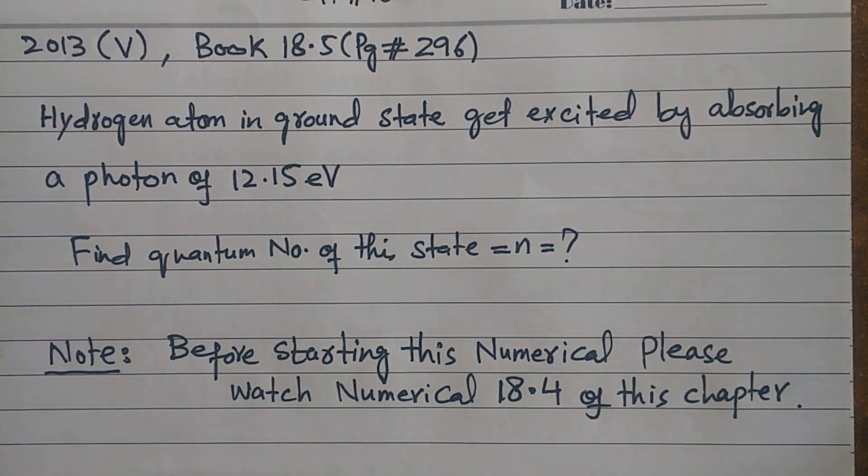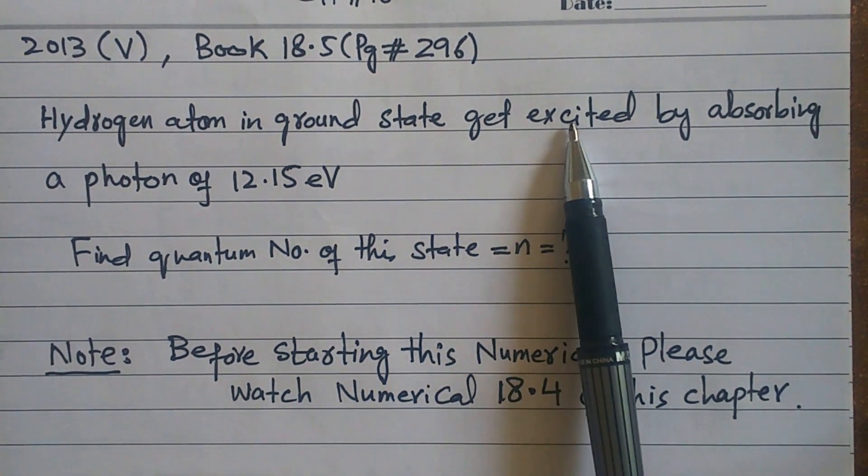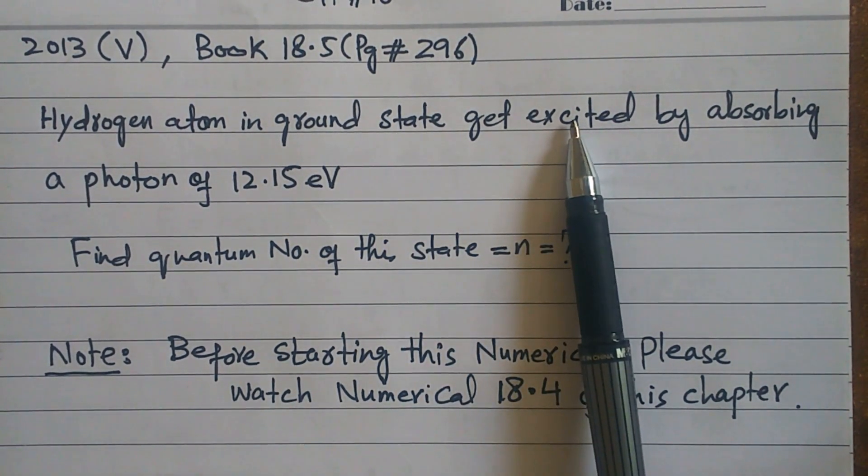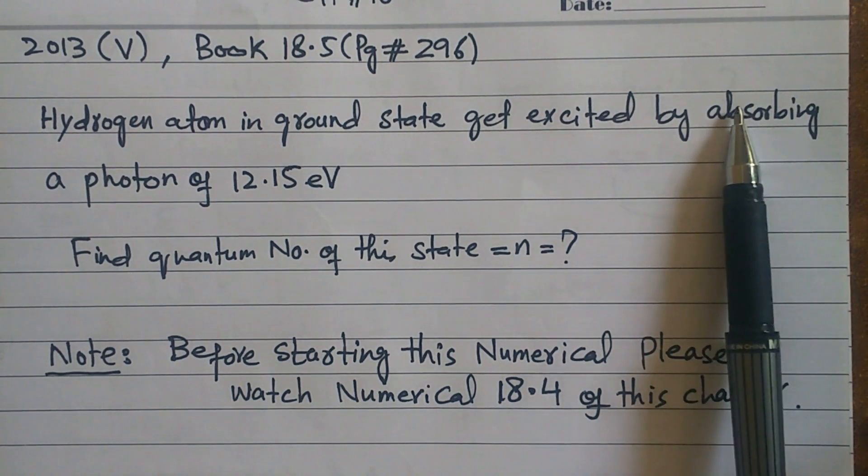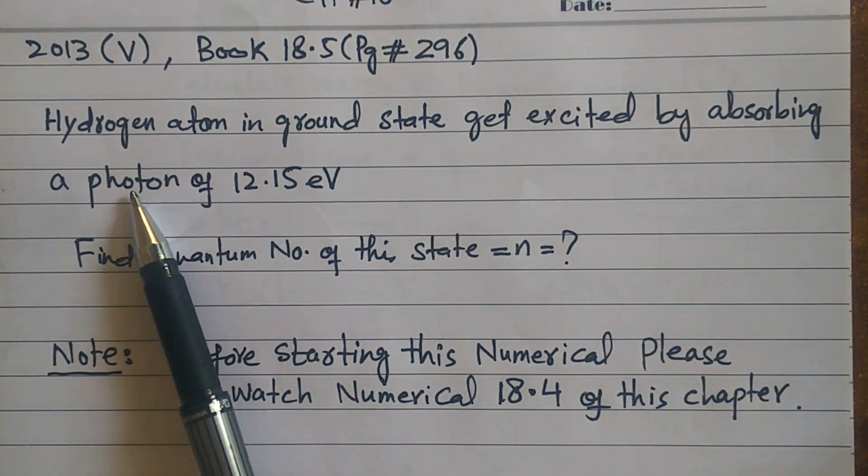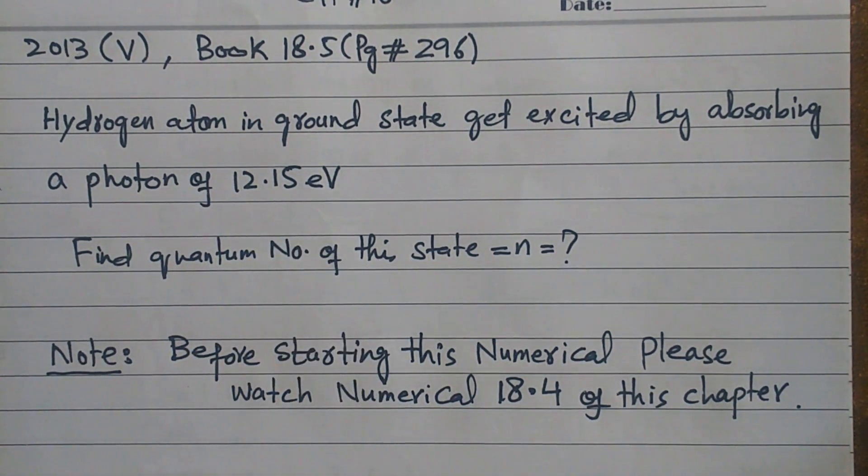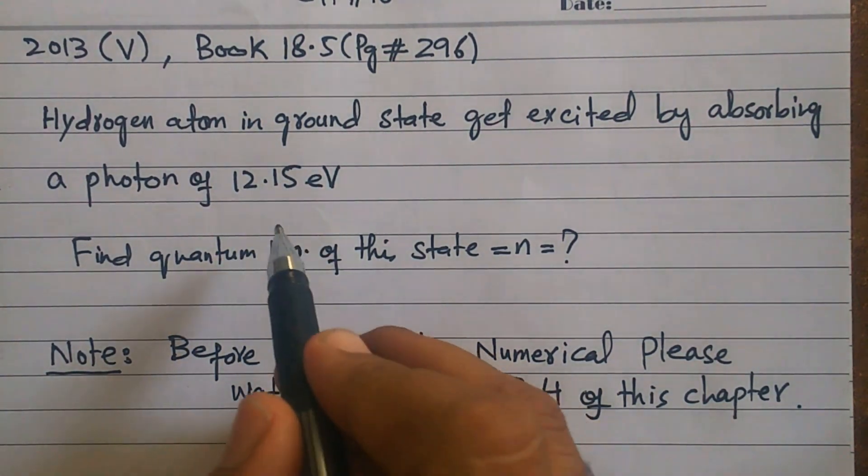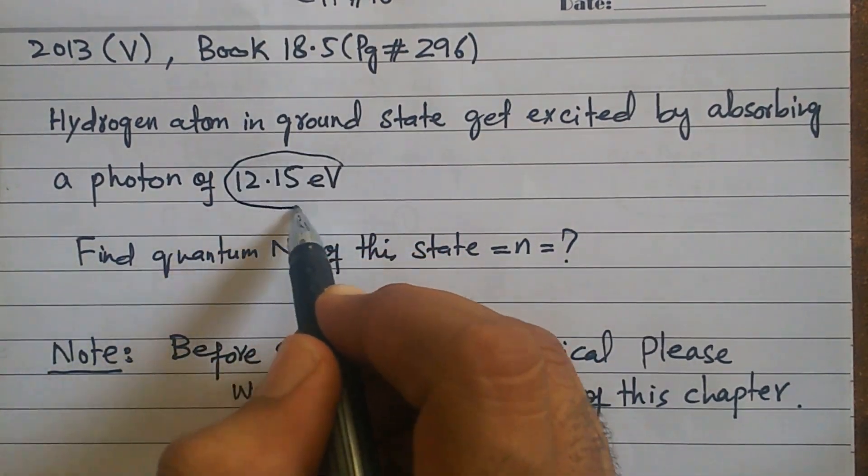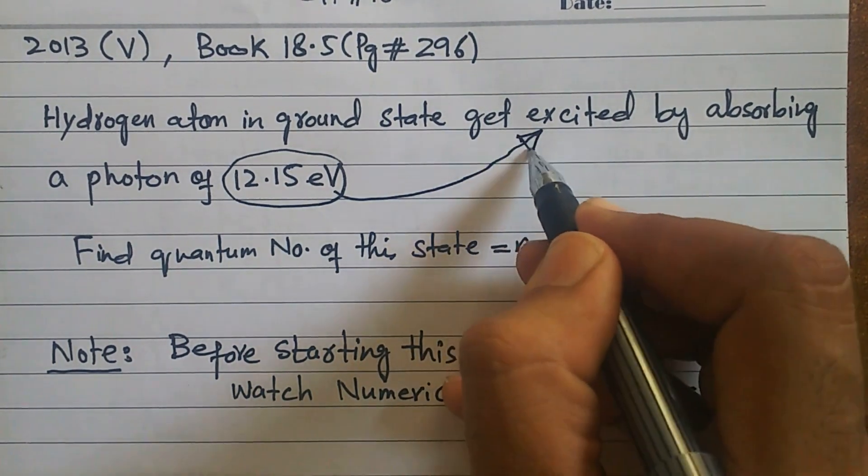Hydrogen atom originally in ground state gets excited by absorbing a photon with energy of 12.15 electron volts. This means we have absorbed 12.15 electron volts of energy. Which state is it going to?